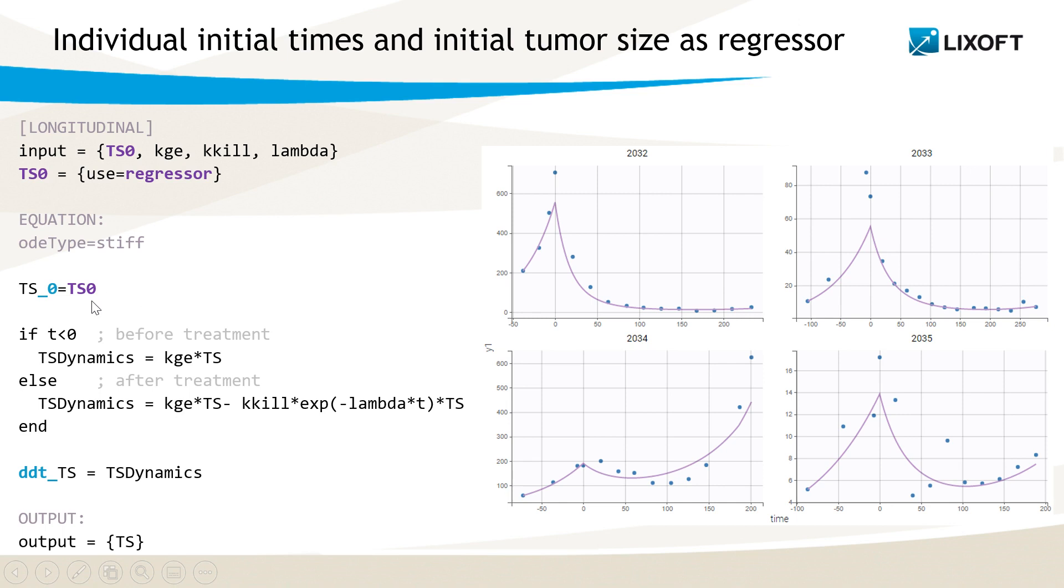could be estimated as a parameter, but it might not be possible to describe it with a simple distribution, especially if it represents sizes of tumors that may be at different stages. Another option used here is then to read it as a regressor from the data.